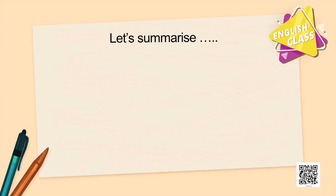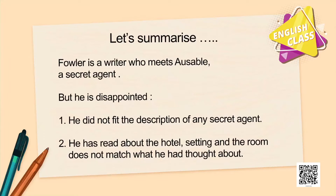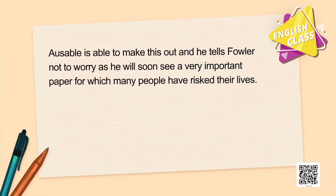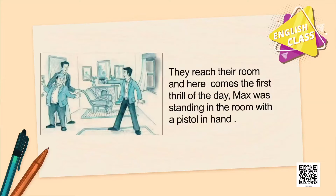Let us summarize. Fowler is a writer who meets Ausable, a secret agent, but he is very disappointed. First, Ausable does not meet any physical requirement of a secret agent. Second, the hotel room also does not meet his expectations. Ausable tells Fowler not to worry and that he will soon see a very important paper for which many people have risked their lives. They reach the room, and here comes the first thrill — Max was standing there with a pistol in hand, aiming at both of them.